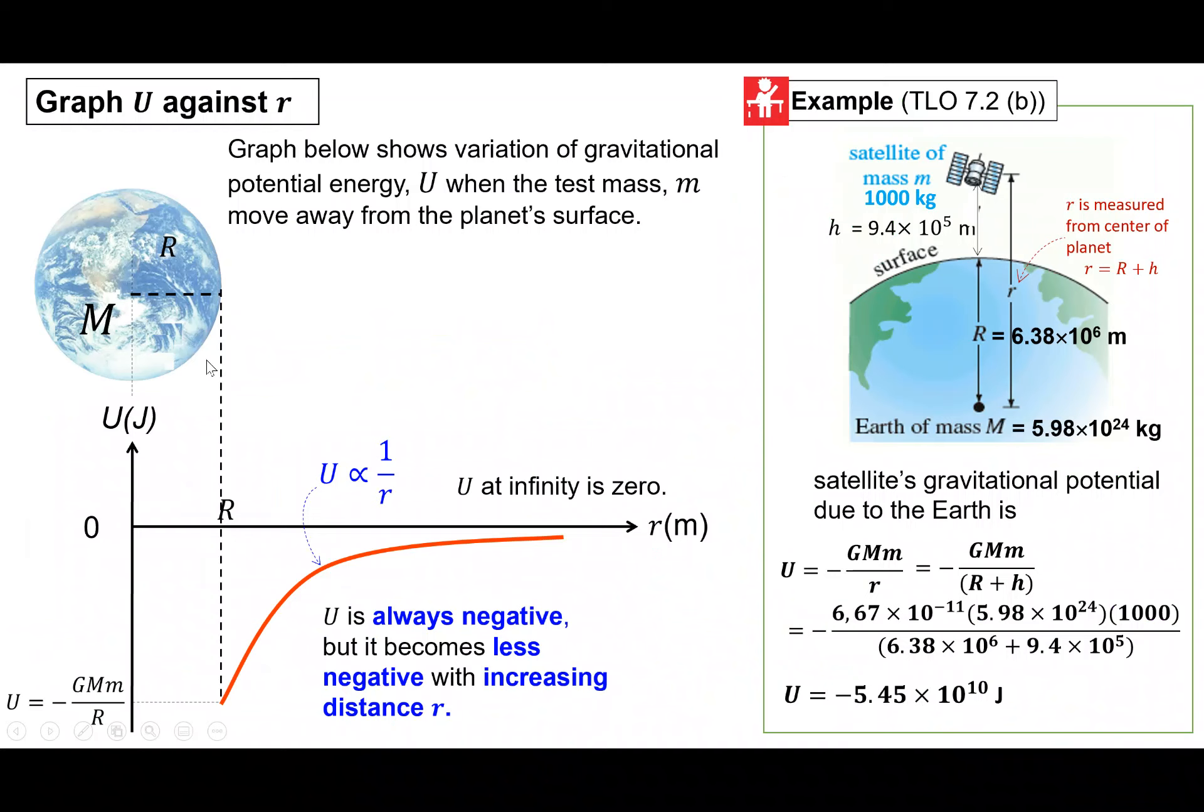So kita ada graf bila kita nak plot potential energy against distance between the planet and the object. Pada surface bumi, start daripada surface bumi. Kita punya potential energy yang kita ada adalah U sama dengan negative G M besar M kecil over R besar. R besar ni merujuk, dekat sini merujuk kepada radius, radius of the earth. R ni adalah radius of earth.